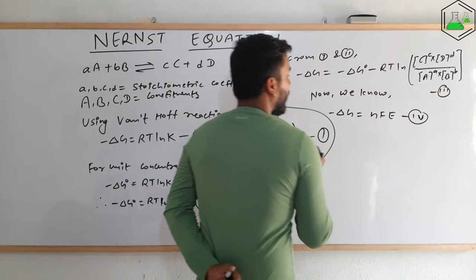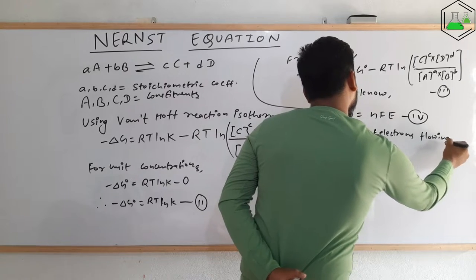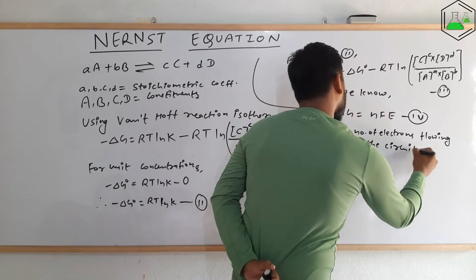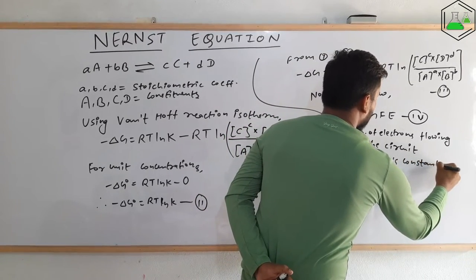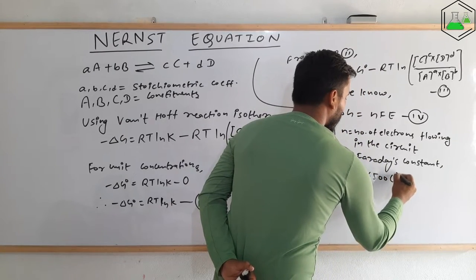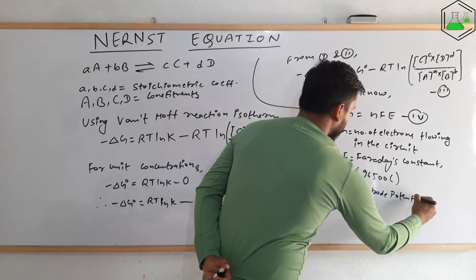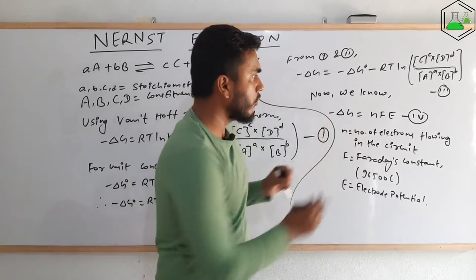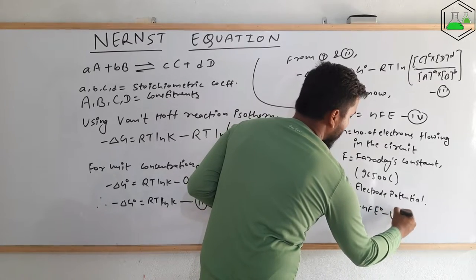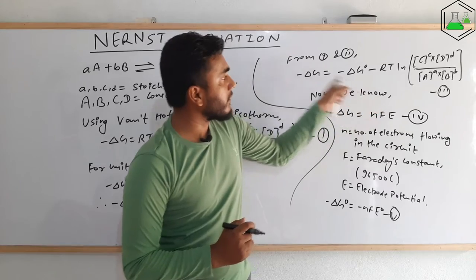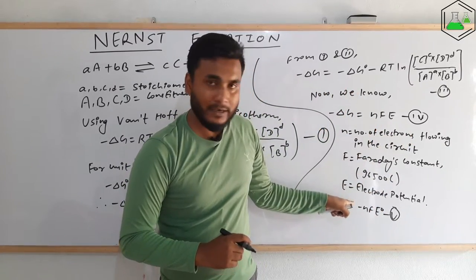Here, N is the number of electrons flowing in the circuit, F is Faraday's constant (its value is 96,500 coulombs), and E means electrode potential. Similarly, at standard condition, ΔG° = −nFE°. This is equation number 4 and equation number 5. Our next step is replacing the values of −ΔG and −ΔG° from equation 3 using equations 4 and 5.